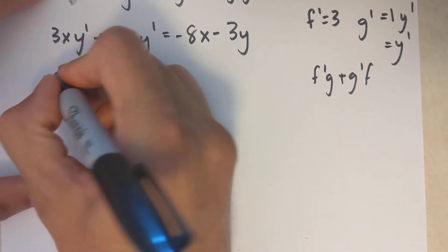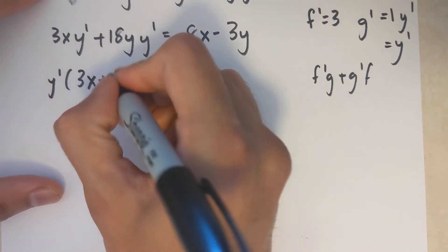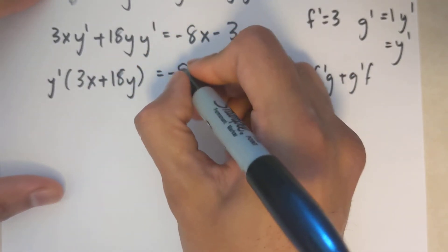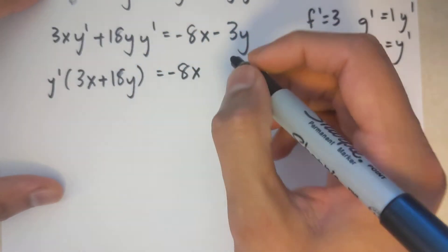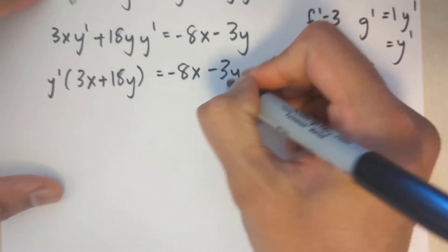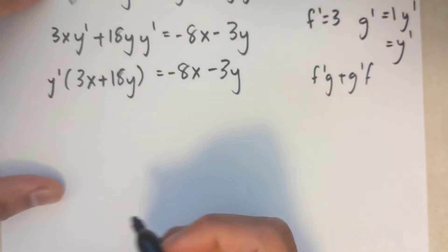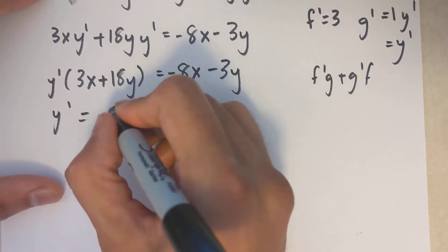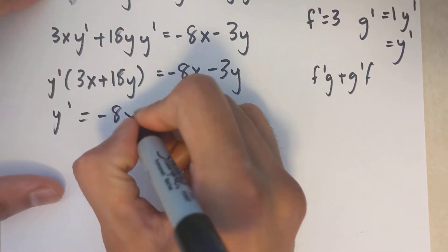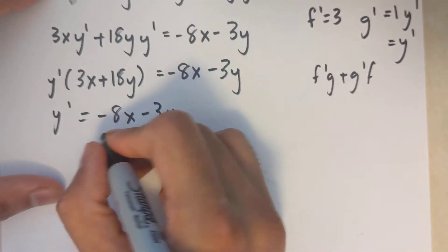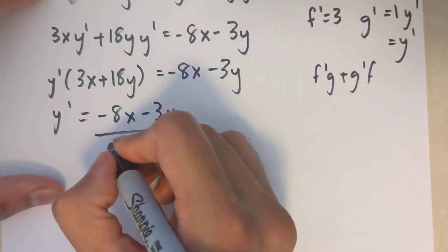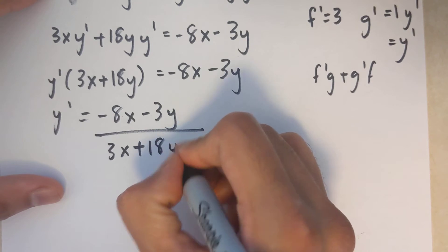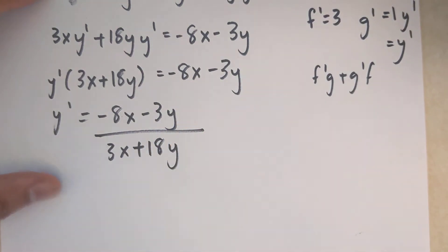Then I factor out y prime: y prime times (3x plus 18y) equals negative 8x minus 3y. Dividing both sides gives y prime equals (negative 8x minus 3y) divided by (3x plus 18y), and that is my final solution.